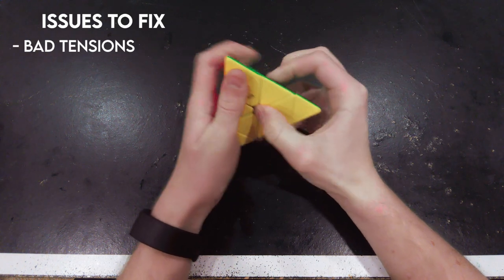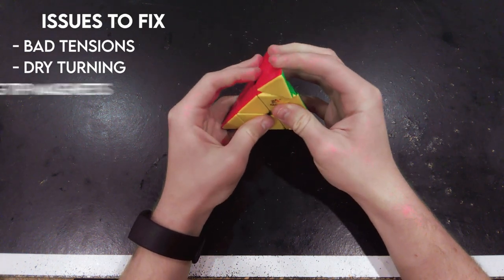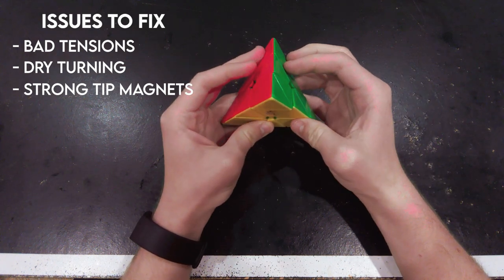Out of the box, these puzzles have loose tensions, dry turning, and very strong tip magnets, and we're going to fix all of those problems.